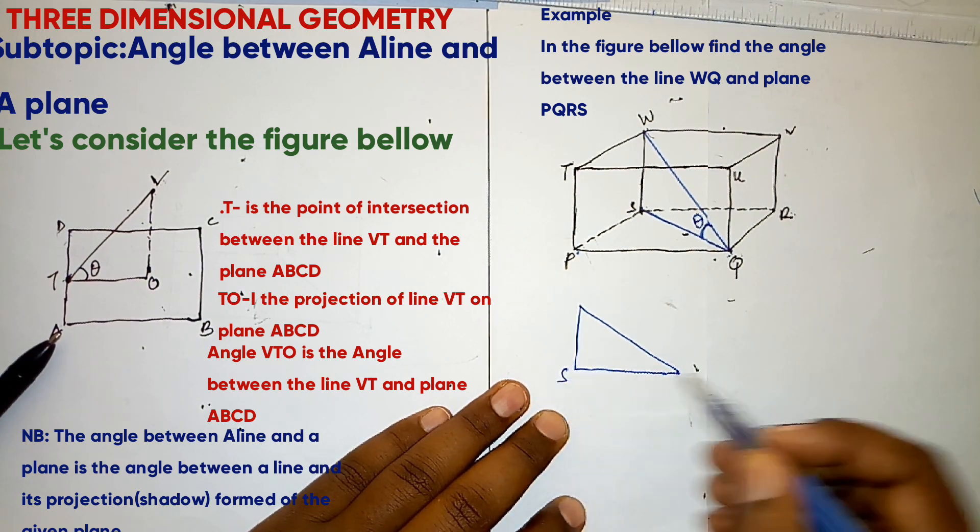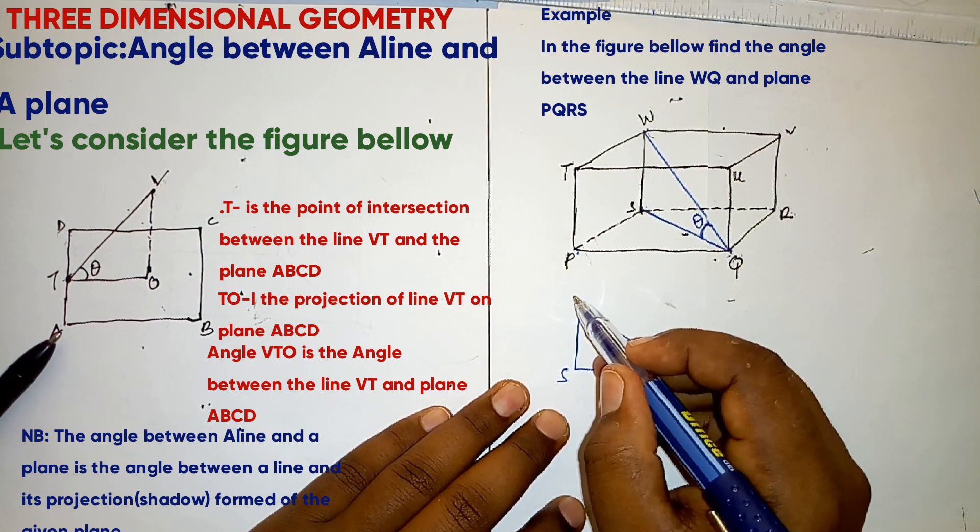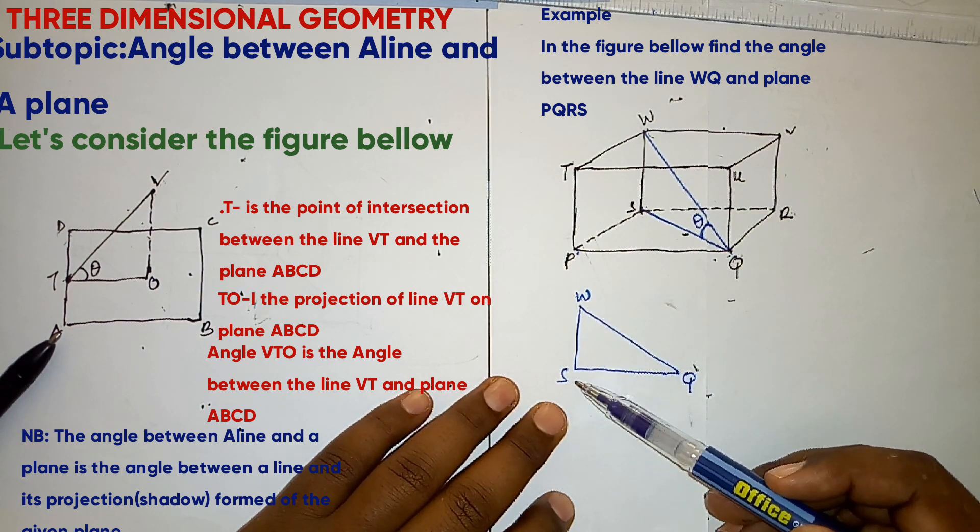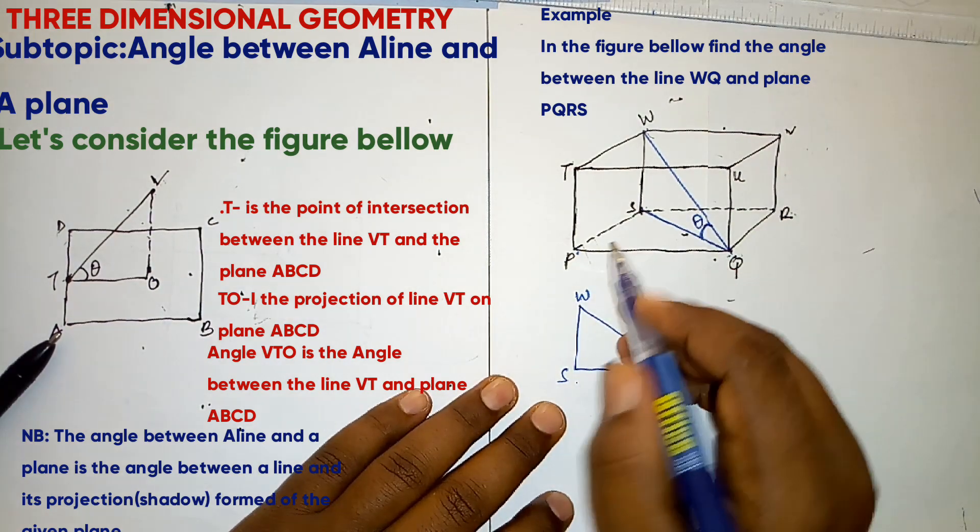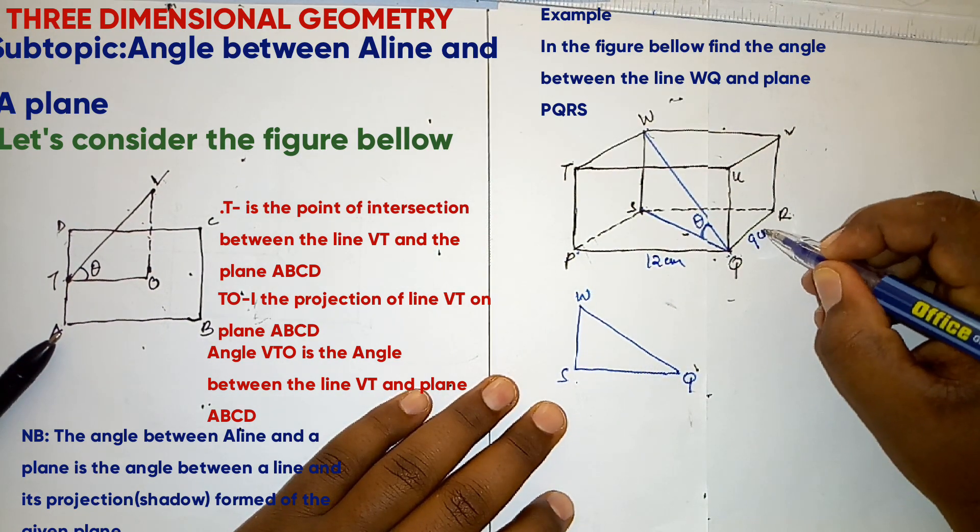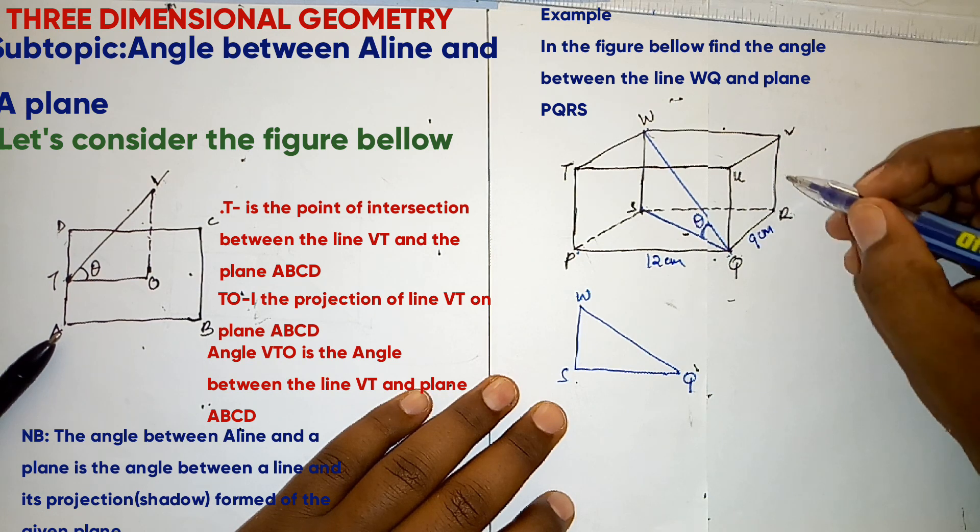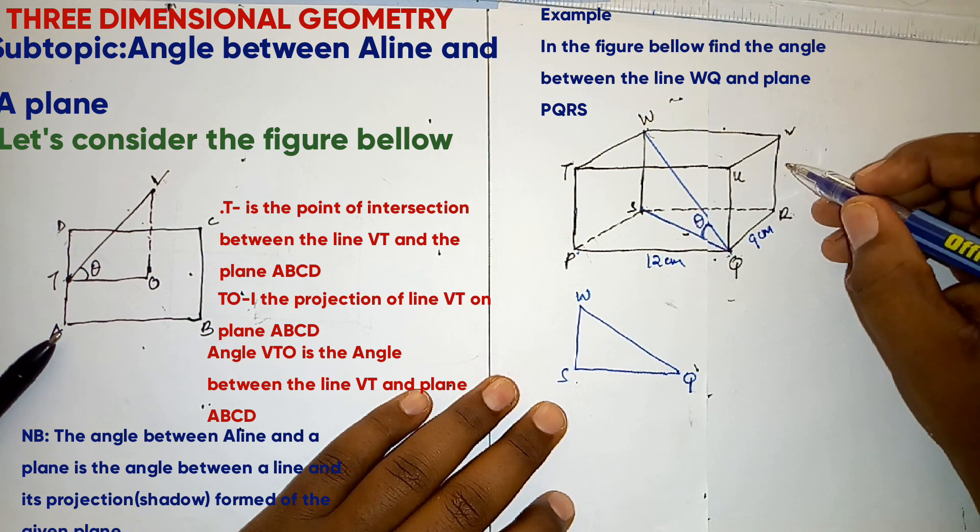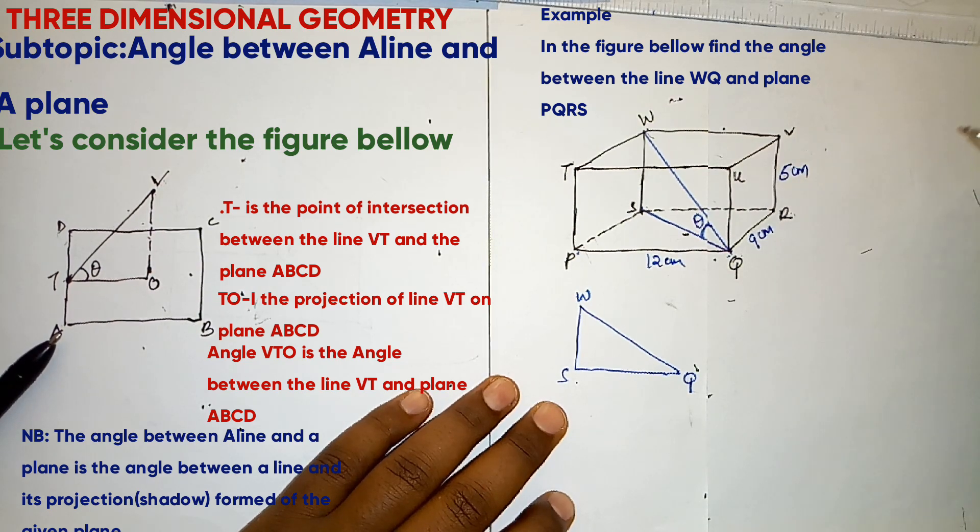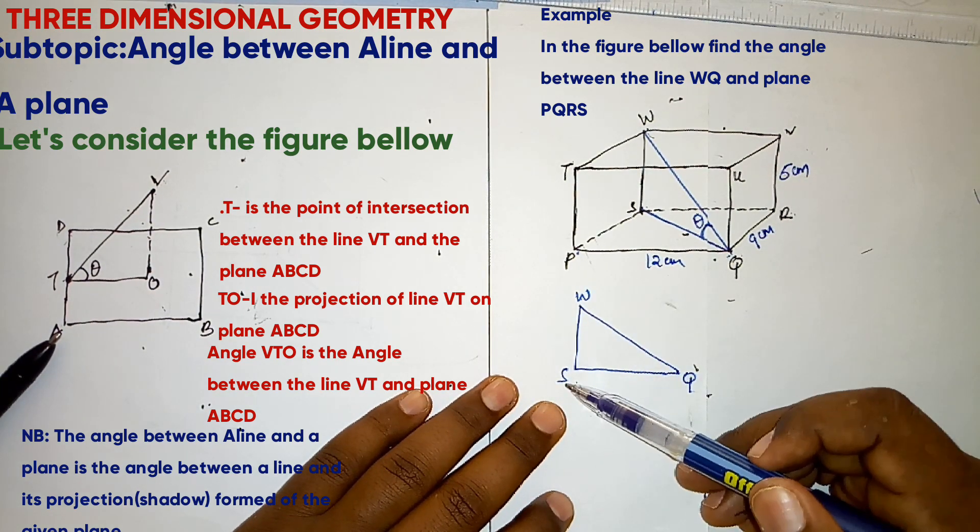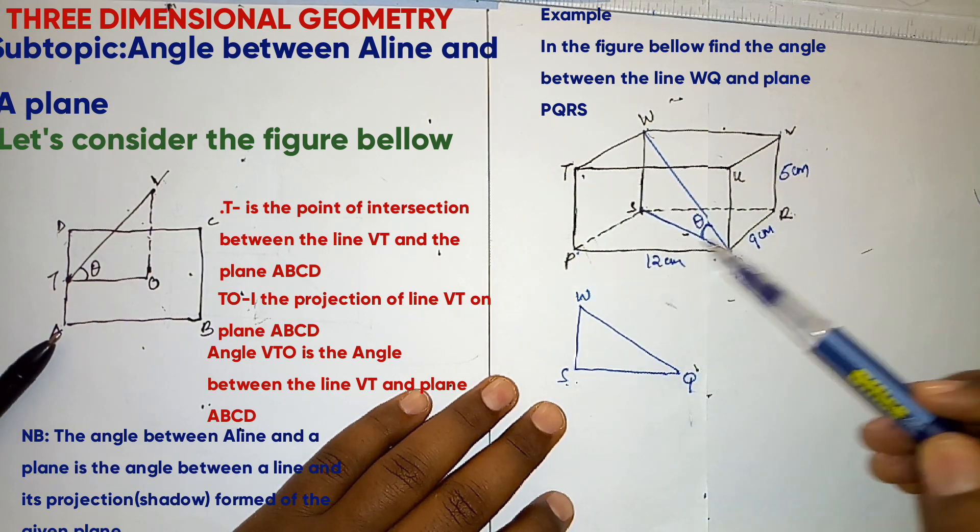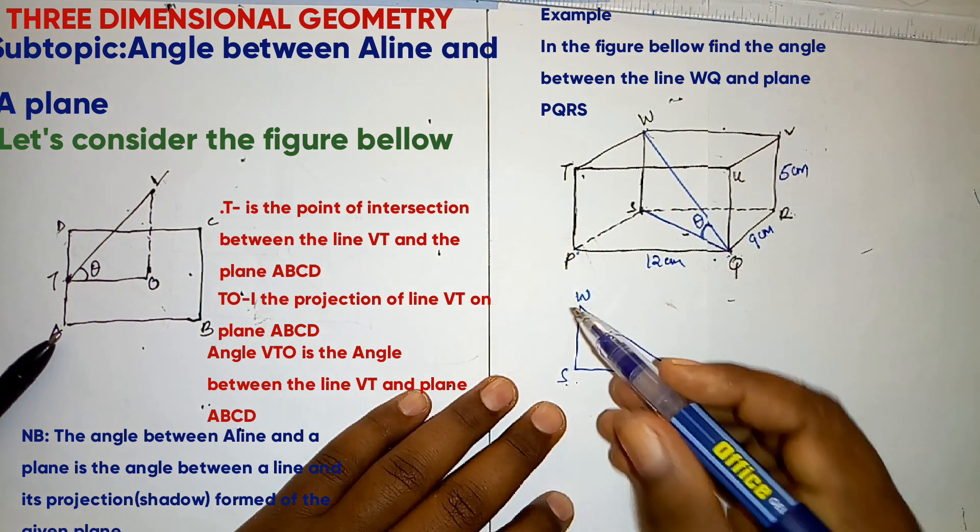So here we have S, Q, W. We already have WS. PQ is 12 centimeters. QR is 9 centimeters. And VR is 5 centimeters. So already we have WS which is equal to VR, the height of the solid, which is 5.